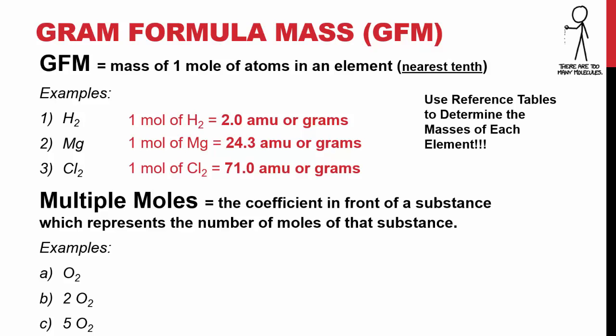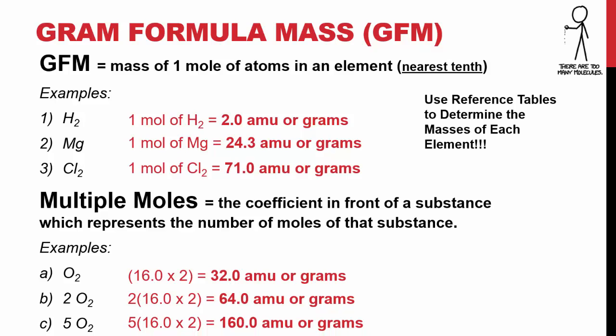When you have multiple, you're going to see coefficients in front, which represents that there's multiple numbers of those molecules or those atoms. In the first example, we see no coefficient, so no number in front, so we represent that by 1. Since there's 2 oxygen atoms, you're going to say 16.0 times 2, which gives us 32.0 grams for every 1 mole. If you have 2 O2s, it's saying that we have 2 moles of this, so you just multiply everything by 2. If you have 5, that means there's 5 moles of the O2, so you just multiply everything by 5.